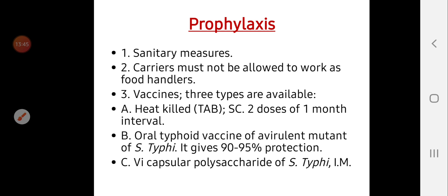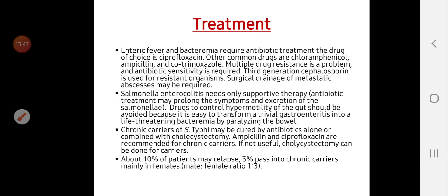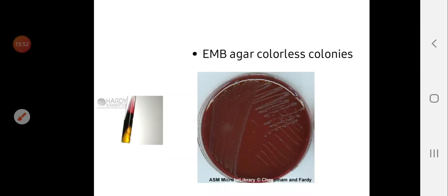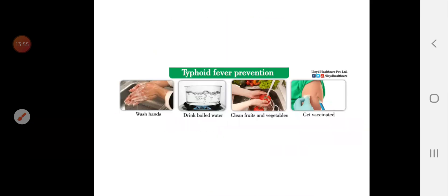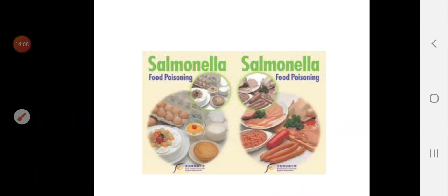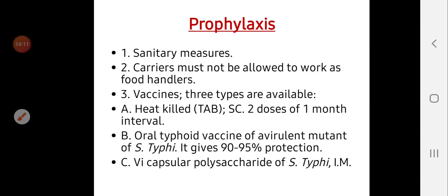Prophylactic methods: the most important is sanitary measures, including washing hands, drinking boiled water, and cleaning fruits and vegetables. Vaccination is also important, and there are three types of vaccine: heat-killed vaccines, oral vaccines, and capsular polysaccharide vaccines for Salmonella typhi. Carriers must not be allowed to work as food handlers.